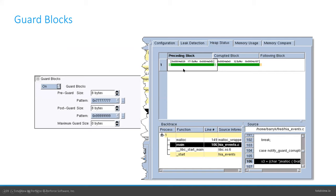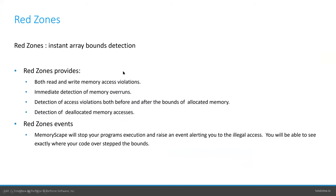MemoryScape has several debugging levels: low turns on event notifications and leak detection with best performance; medium adds corrupted memory detection with guard blocks; high uses corrupted memory detection with red zones; extreme is all options combined. The recommendation is to start with low first and gradually move up. Guard blocks are lightweight patterns written around memory allocations — typically 8 bytes pre- and post-guard — shown as green in the heap view; a corrupted guard block turns orange, flagging an overrun. Red zones are similar to guard blocks but provide array buffer overrun detection using a whole memory page.